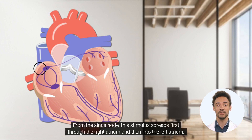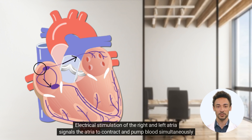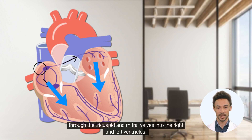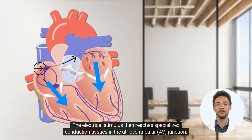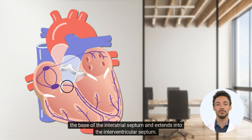From the sinus node, this stimulus spreads first through the right atrium and then into the left atrium. Electrical stimulation of the right and left atria signals the atria to contract and pump blood simultaneously through the tricuspid and mitral valves into the right and left ventricles. The electrical stimulus then reaches specialized conduction tissues in the atrioventricular, or AV, junction, which acts as an electrical relay connecting the atria and ventricles, located at the base of the interatrial septum and extending into the interventricular septum.